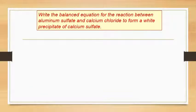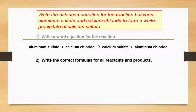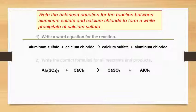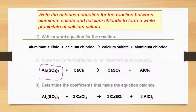Second practice equation: write the balanced equation for the reaction between aluminium sulfate and calcium chloride to form calcium sulfate (a white precipitate) and aluminium chloride. The word equation is: aluminium sulfate + calcium chloride → calcium sulfate + aluminium chloride. Write the correct formulas, being careful with the brackets in aluminium sulfate. The balanced equation requires three calcium chlorides, three calcium sulfates, and two aluminium chlorides — a harder example you're expected to be able to do.